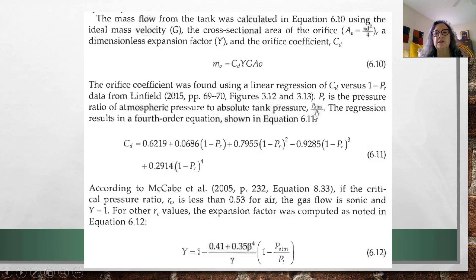P sub R is the atmospheric pressure over the pressure in the tank. So atmospheric pressure, we said was 740 millimeters of mercury divided by the pressure in the tank. Be sure you're using absolute pressure on these.